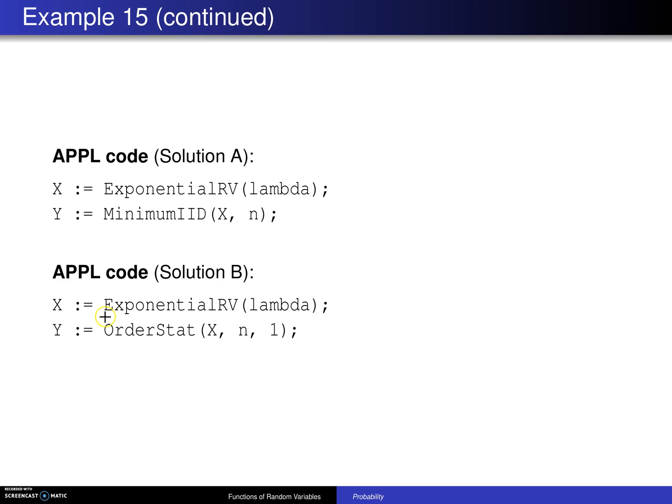The other solution starts the same. x gets set to an exponential random variable with parameter lambda. Then what you do is say, out of a sample of size n drawn from that exponential population, what is the distribution of the first order statistic, and that will give you that very same result.